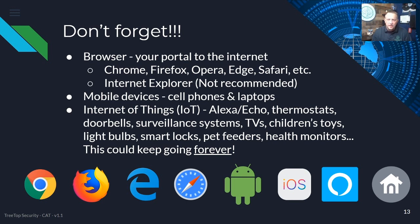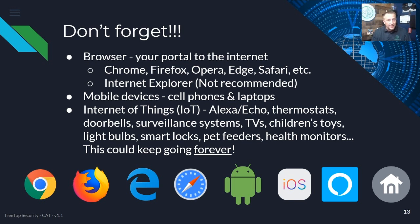Last but not least, we have the Internet of Things — Amazon Alexa, Google Home, thermostats, doorbells, and all sorts of things. A lot of manufacturers are doing a very good job of automatically updating their devices. Unfortunately, many others — surveillance systems, TVs, light bulbs, smart locks — do have updates but require you to manually apply them. If one of those devices gets a vulnerability today, that vulnerability remains present on your network until you actually update it, and in many cases that never happens.